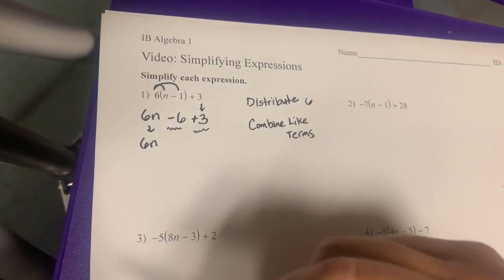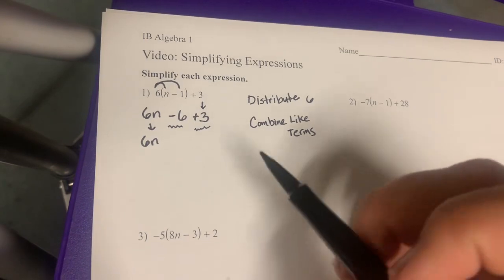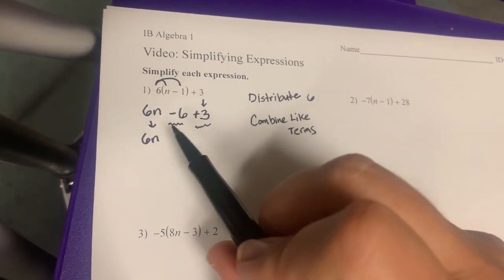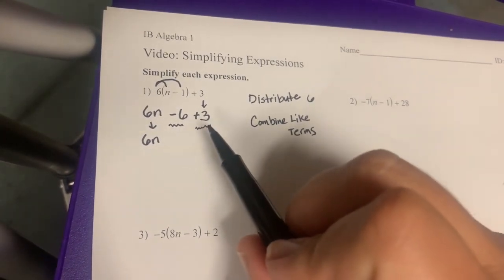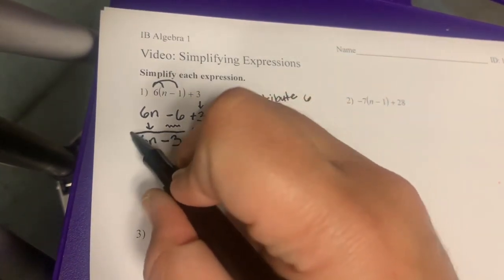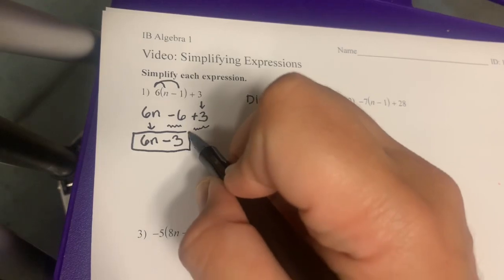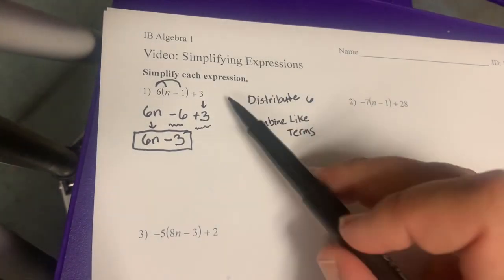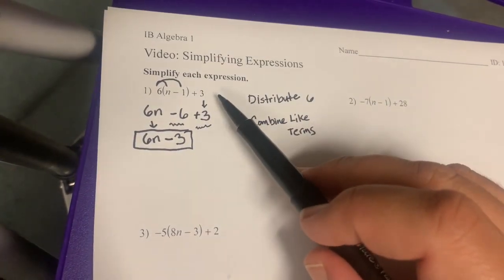...both of them do not have an n. They're both just plain numbers, so they can be simplified, meaning they can be combined together. So negative 6 plus positive 3 is going to be a negative 3. So I'm going to put minus 3. And so 6n minus 3 is our simplified form from the beginning, which was 6 parentheses n minus 1 plus 3.